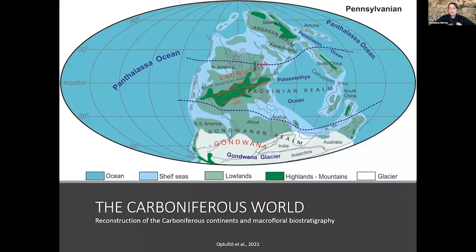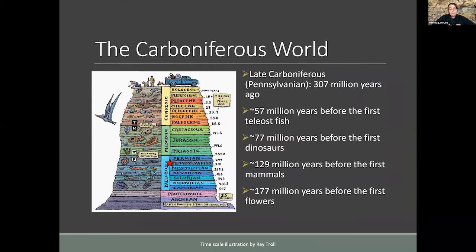To find out, we'll go deeper into the actual Maison Creek fossil site. Starting with a broad overview of the Carboniferous world: the Maison Creek is late Carboniferous, or Pennsylvanian in age, about 307 million years ago. This alone tells us the ecosystem was quite different from today, because many dominant animal and plant components of modern ecosystems had not yet evolved. This is about 57 million years before the origin of teleost fish and about 77 million years before the earliest dinosaurs.